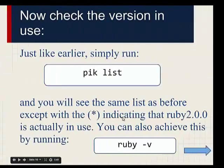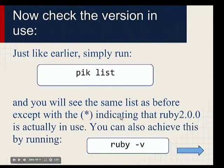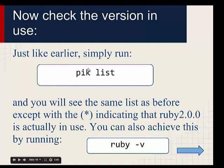Let's check the version in use — we've already done this actually. You can always check which version of Ruby is active by running `pik list` and seeing where the star is.